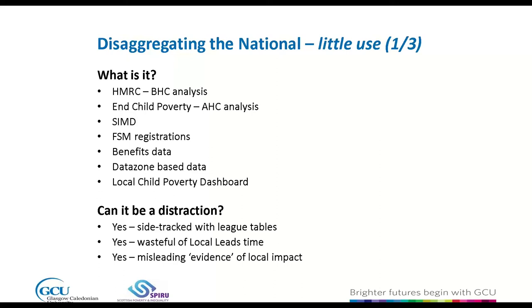There are a whole set of other national data that can be disaggregated locally as well: the Scottish Index of Multiple Deprivation gives us a sense of collections of deprivation for small areas; free school meal registrations are reported annually at school and local authority level; benefits data can likewise be available locally; and there are data-zone-based datasets. The Scottish Government's local child poverty dashboard pulls together a range of key data and allows us to present these for different local authorities.